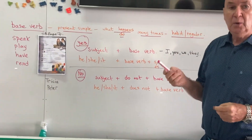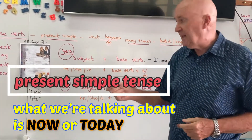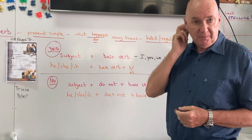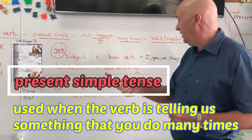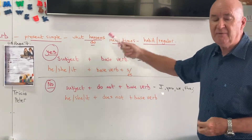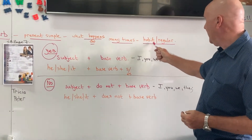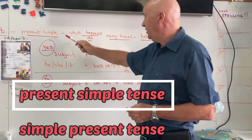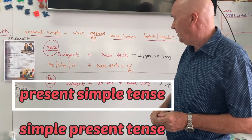What we're talking about now is the present simple tense. We use the present simple tense when the verb is telling us something you do many times — every day, every week, every month — what we call a habit, or something we do regularly. That is called the present simple, or sometimes the simple present. It's the same.